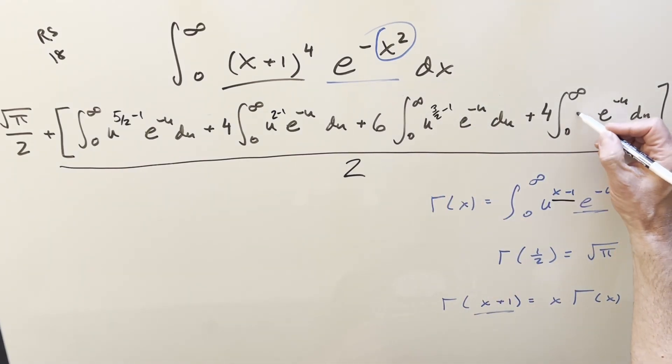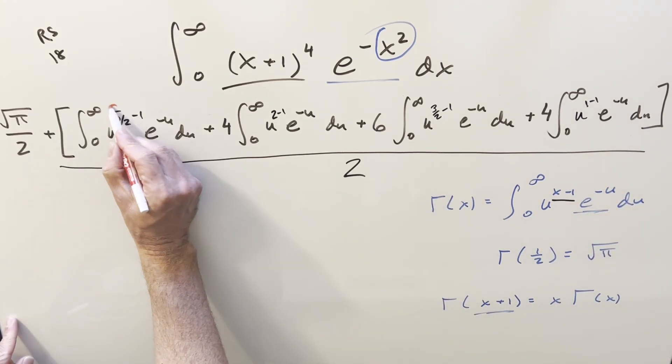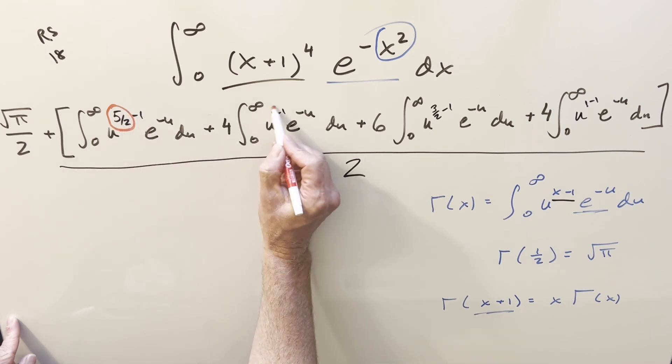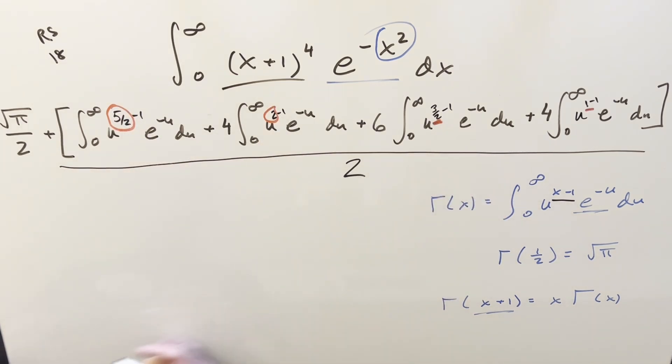Here we don't have a u, but I can create it, writing it as 1 - 1. U to the 0 is just 1. And that's going to give us our input to the gamma function on each of these. So it's just going to be the first part of the exponent.